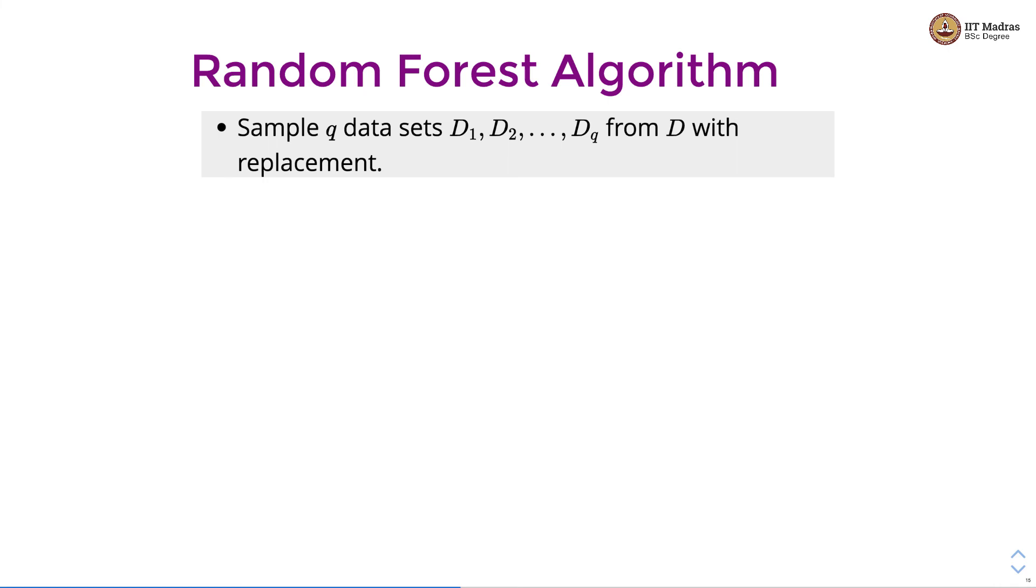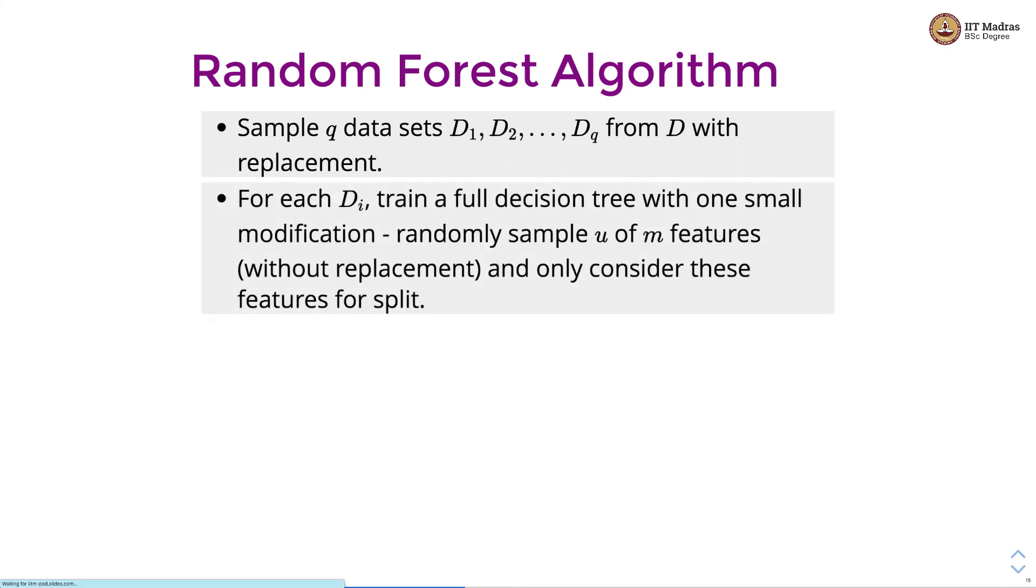Let us look at random forest algorithm. We first sample q data sets d1, d2 all the way up to dq from d with replacement. For each data set di, we train a full decision tree with a small minor modification.